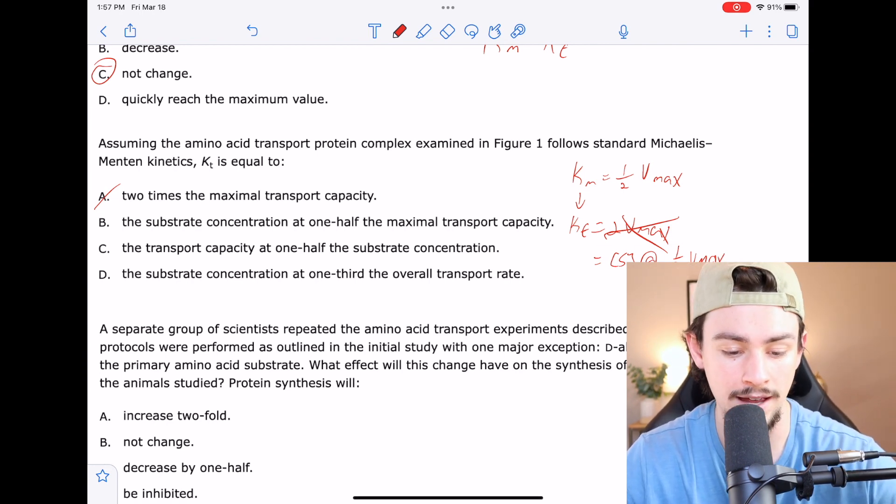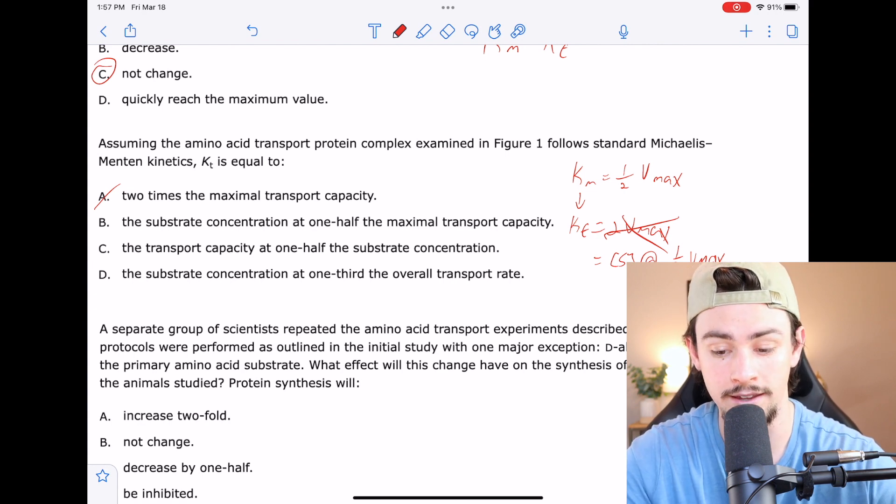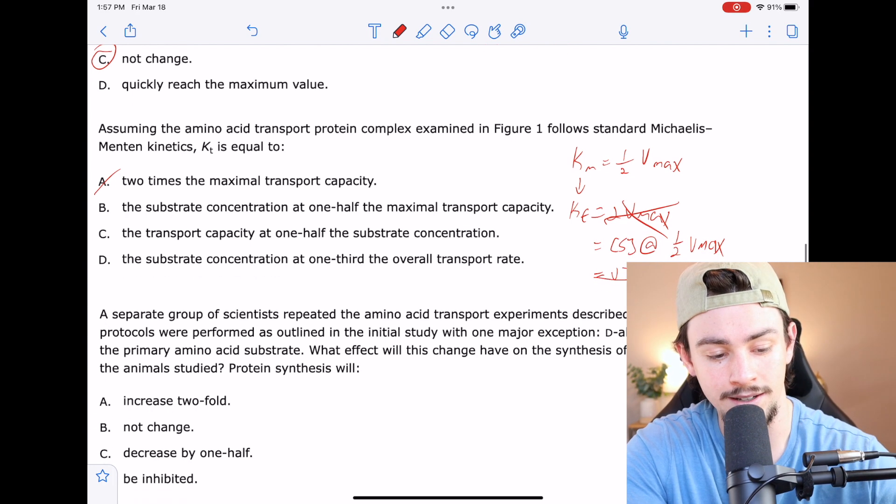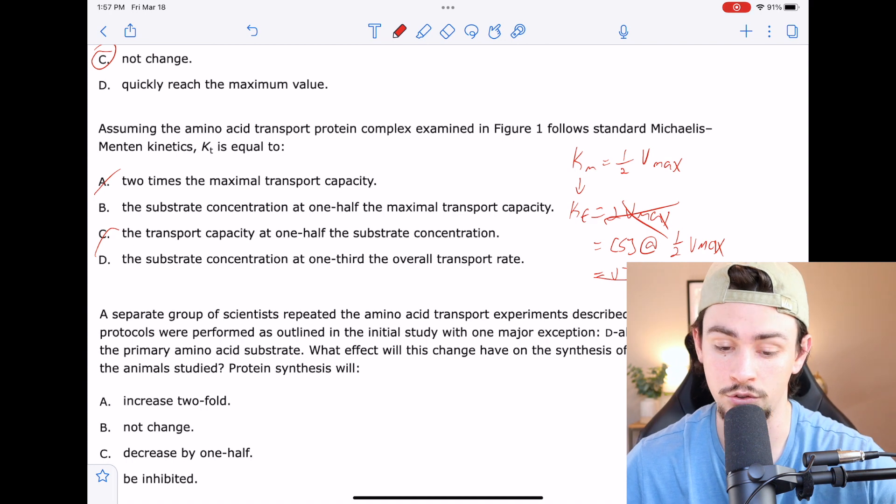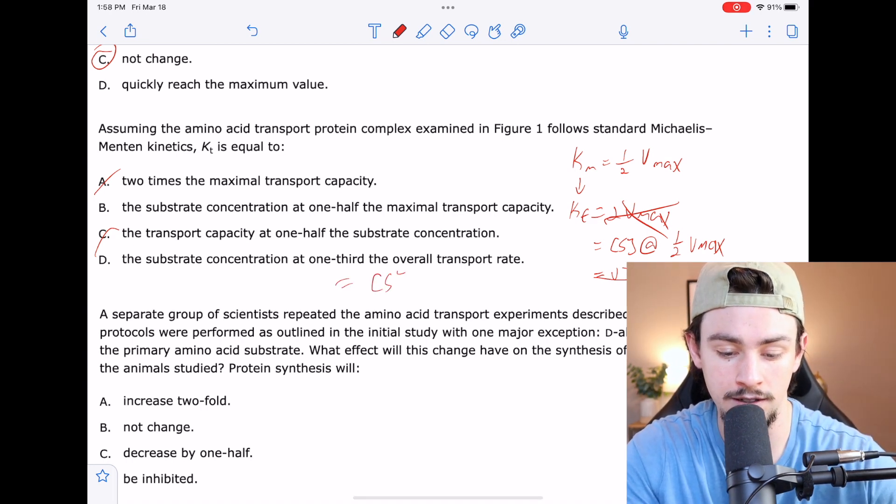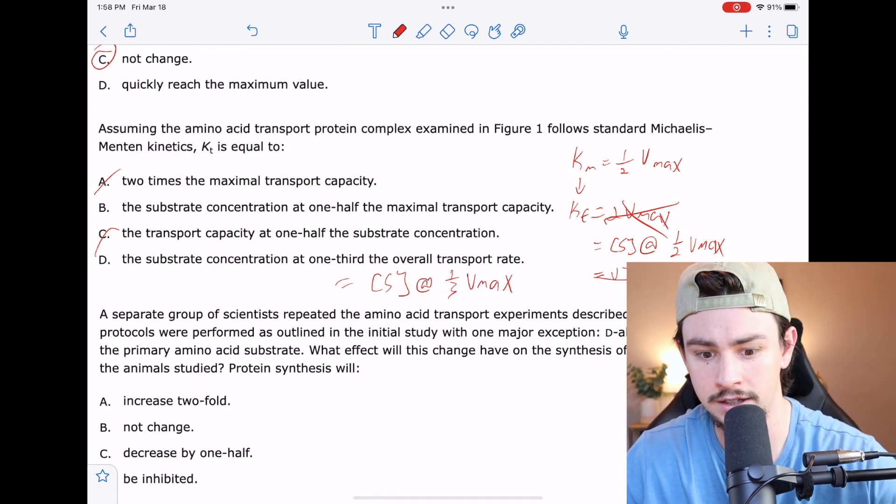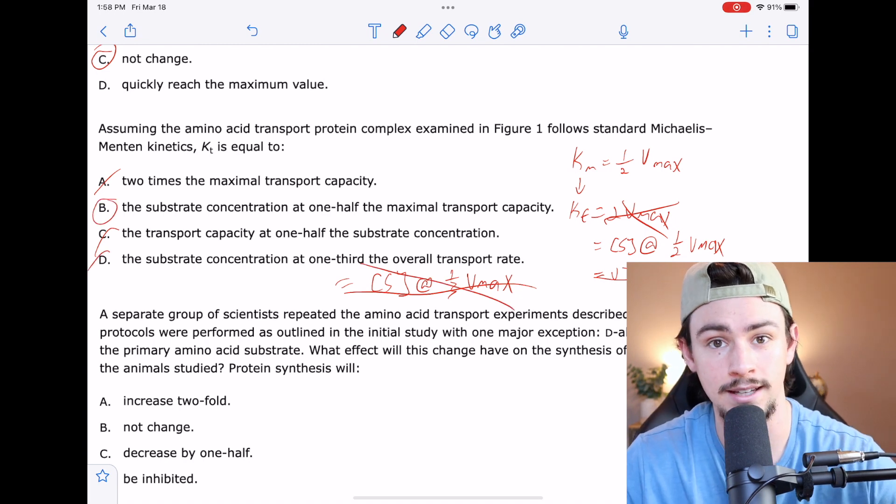C says the transport capacity at one half the substrate concentration. That would say velocity at one half S, which is not what we're looking for. So maybe not C. And then D says the substrate concentration at one third the overall transport rate. So that is saying substrate concentration at one third Vmax, which is not what our KM is equal to either. So we can rule out D and that leaves us with B as the correct answer.